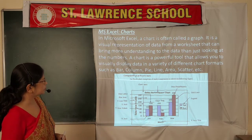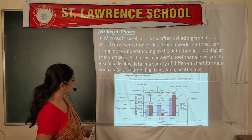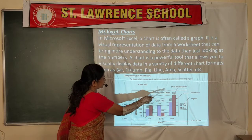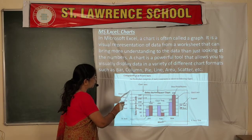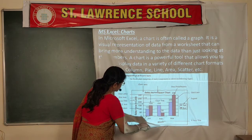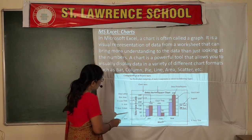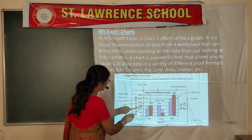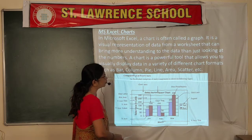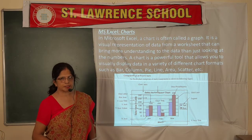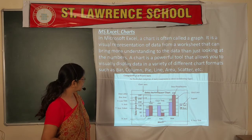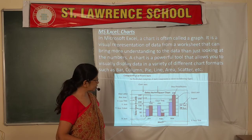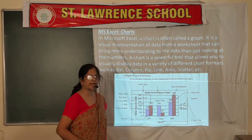When you make a chart, some components are present. The outer boundary is called the chart area, where all chart components reside. Inside the chart area, the inner boundary is called the plot area, where you actually plot the values of the data series. The Y-axis represents the values and the X-axis shows the categories.